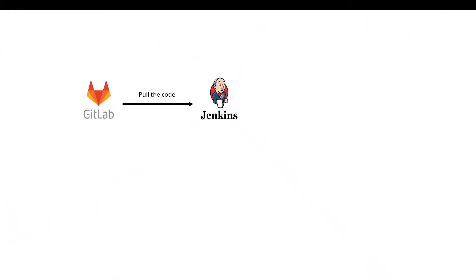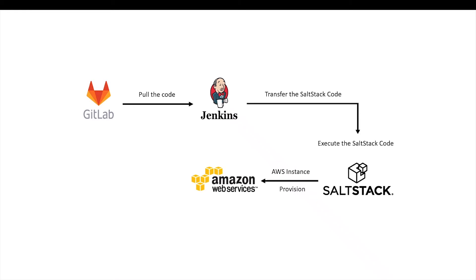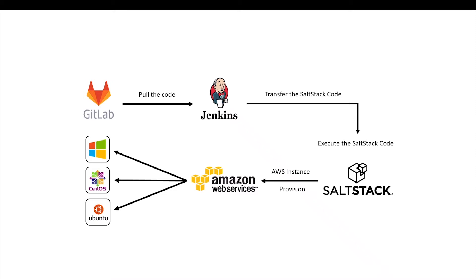In the first stage, Jenkins' job will pull the AWS EC2 Instance Provisioning SaltStack code from GitLab. In the next stage, Jenkins will transfer the SaltStack code to the SaltStack server, which has instructions to provision AWS EC2 instances. In the final stage, Jenkins will execute the SaltStack code on the SaltStack server, which will provision the CentOS instance, Ubuntu instance, and Windows instance. Finally, all three instances will be provisioned in AWS.